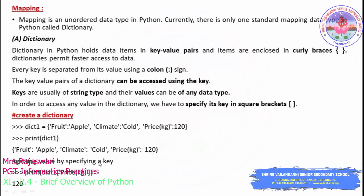In today's class we are going to discuss the remaining data types. In previous classes we discussed numbers and sequence data types. Under number data type you have int, float, complex, and boolean, whereas in sequence you have strings, list, and tuples. Now we are going to discuss other data types like sets, none, and mapping.